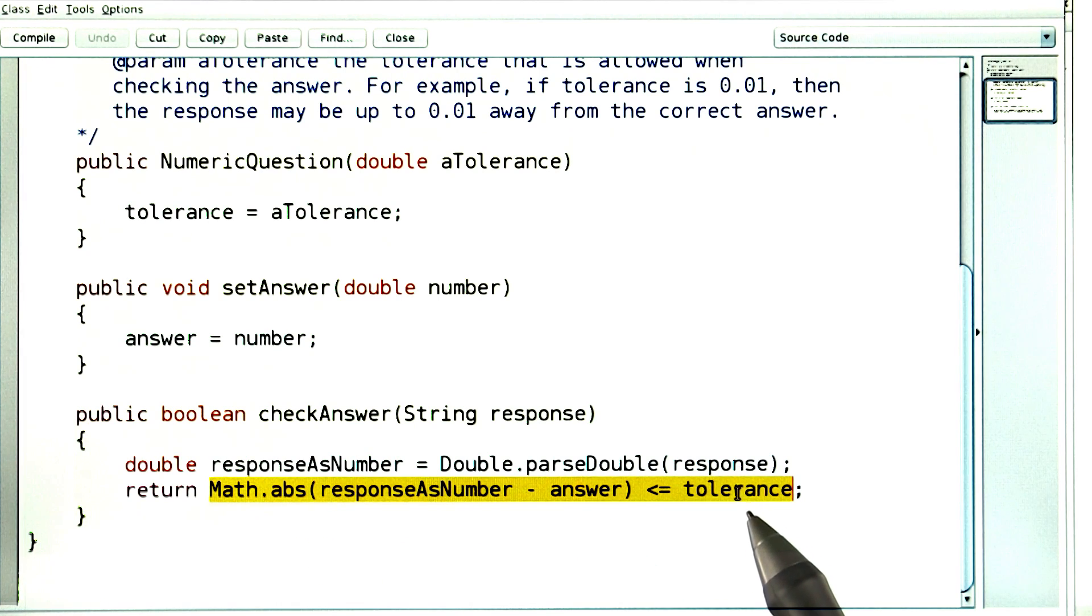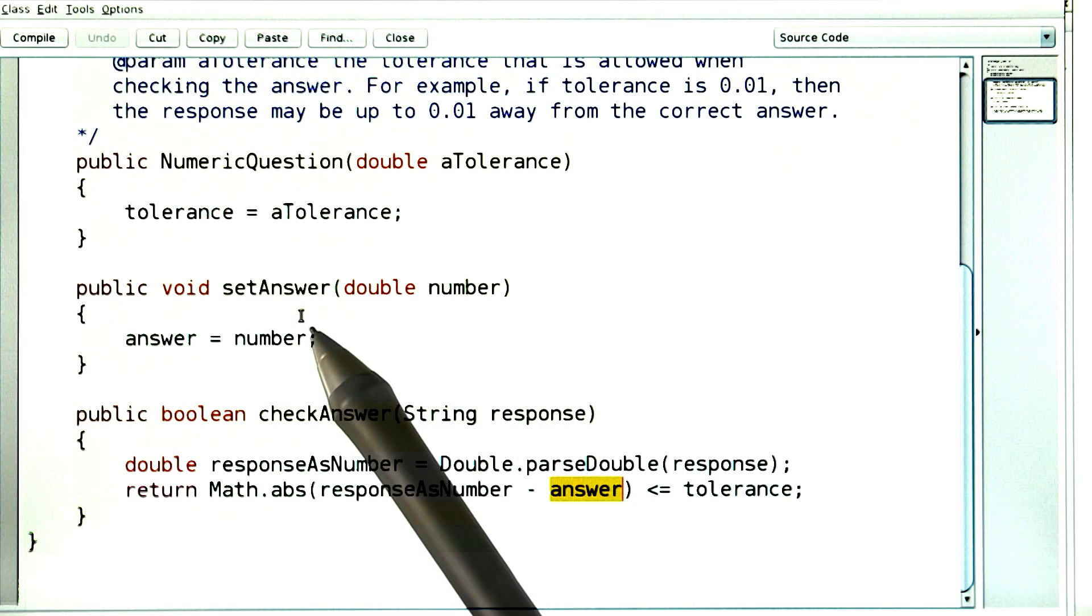Now there's just one catch. What's this answer here? Well, it's whatever was supplied in the set answer method. Interestingly,